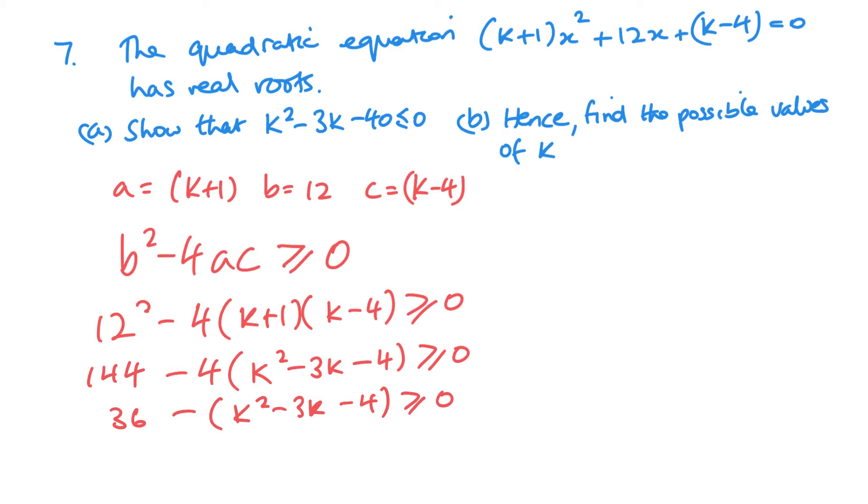Now, all I'm going to do is expand my brackets, just being careful with my signs. And then I'm going to take everything to the other side. Now, obviously, the 36 and the 4 is going to give me 40 there. So when I go to the other side, I'm going to get positive K squared minus 3K. And then the positive 40 will become negative 40. And that then, as you can see, is what we were requiring. K squared minus 3K minus 40 is less than or equal to 0.